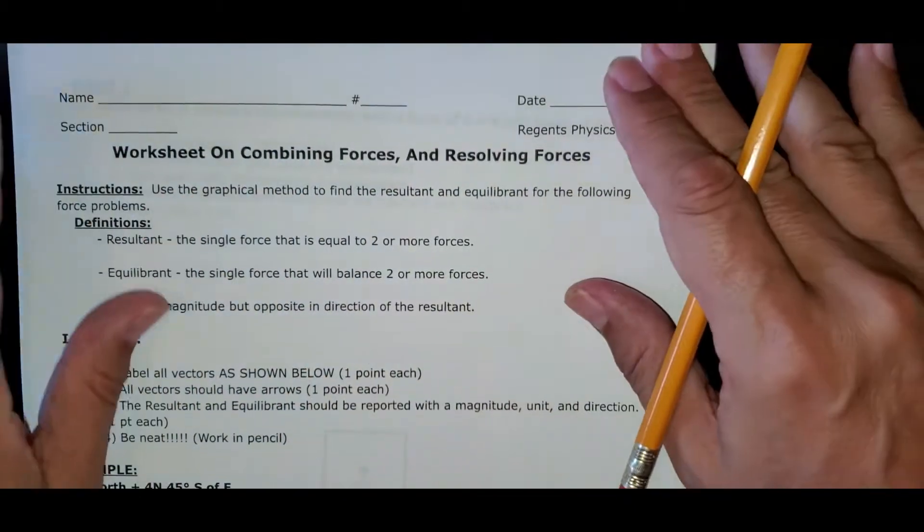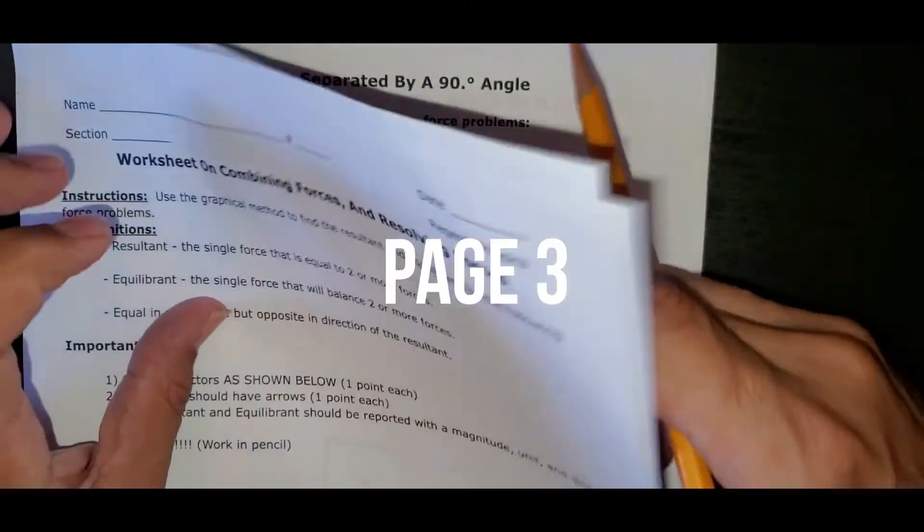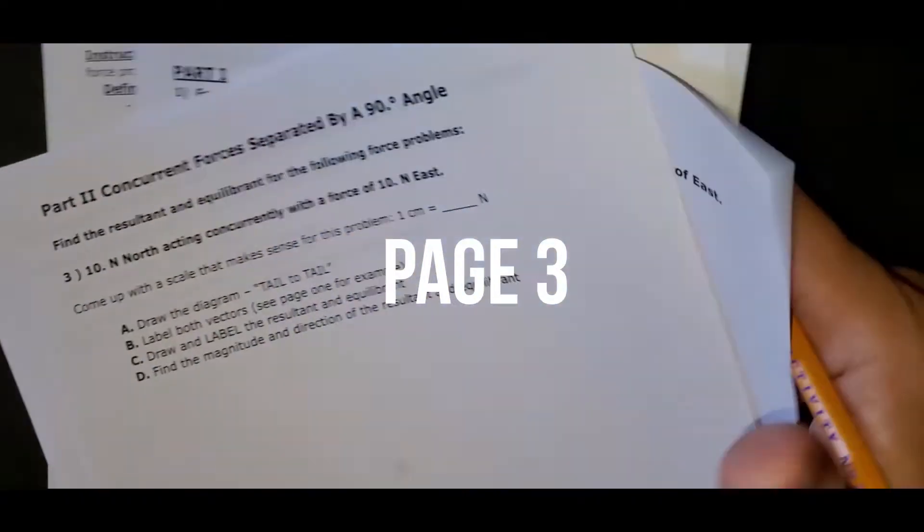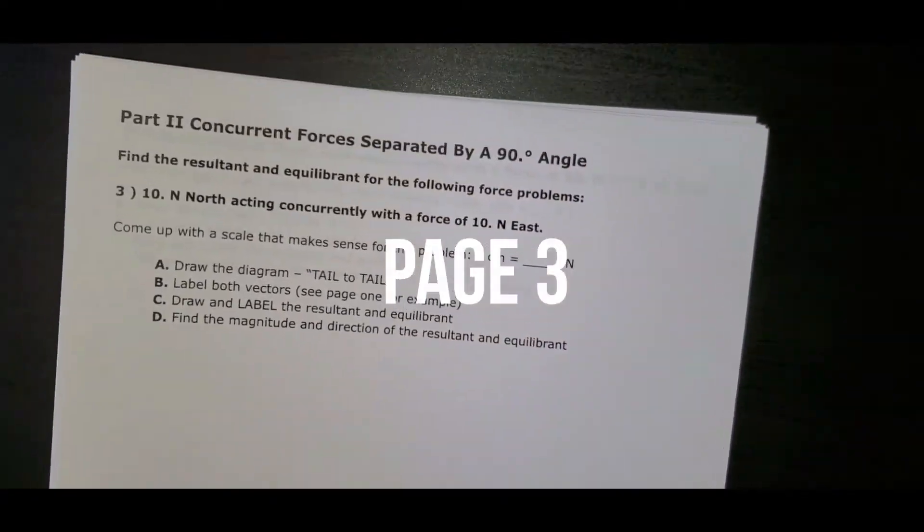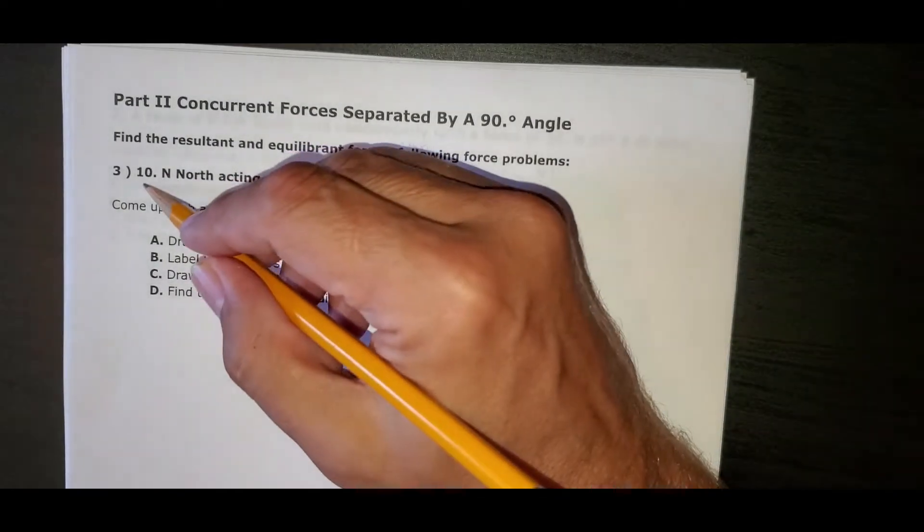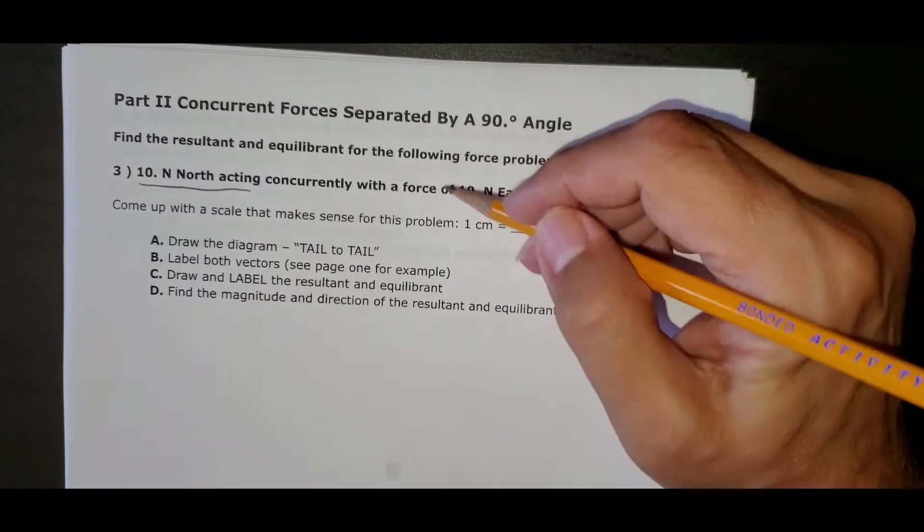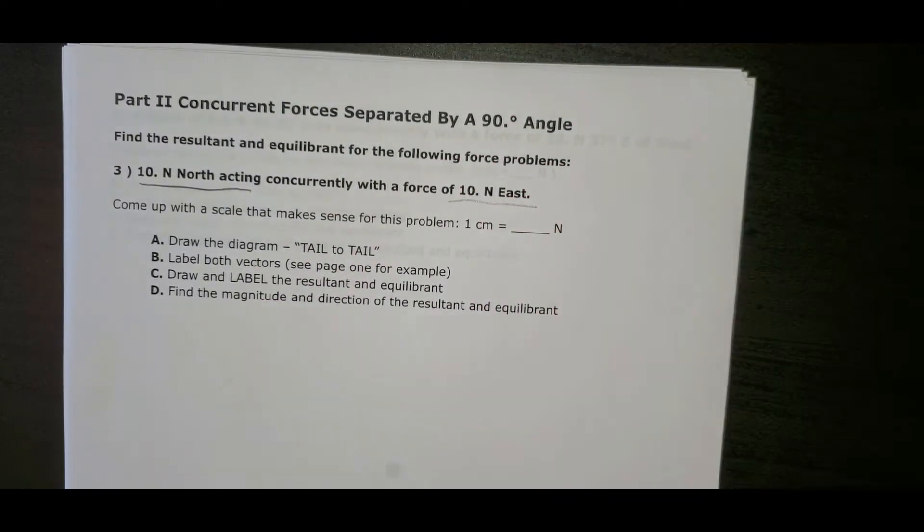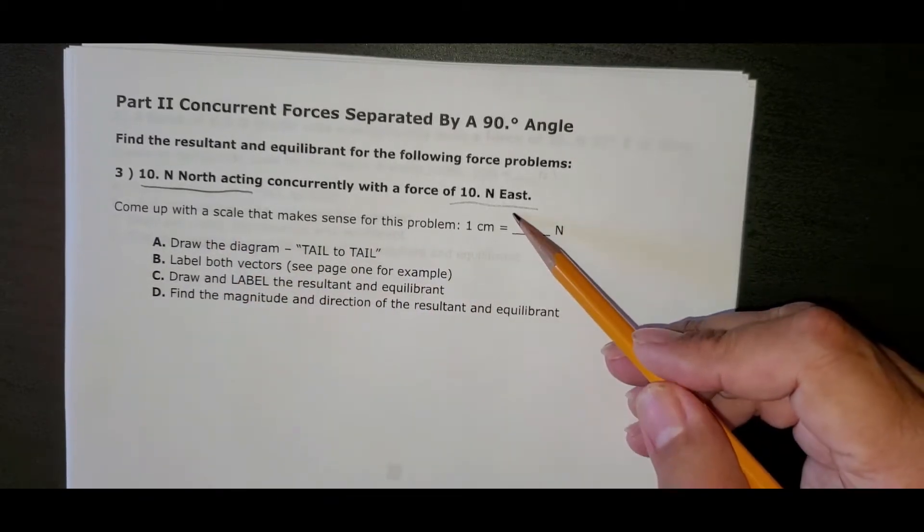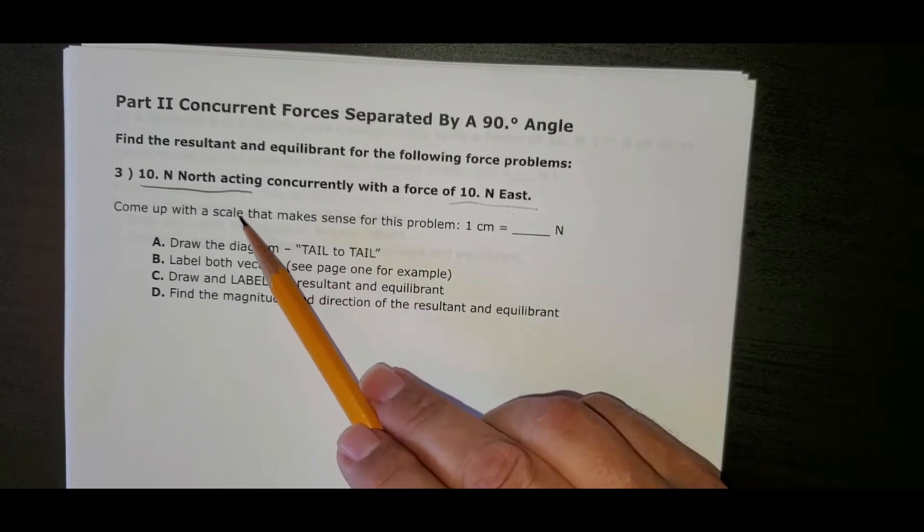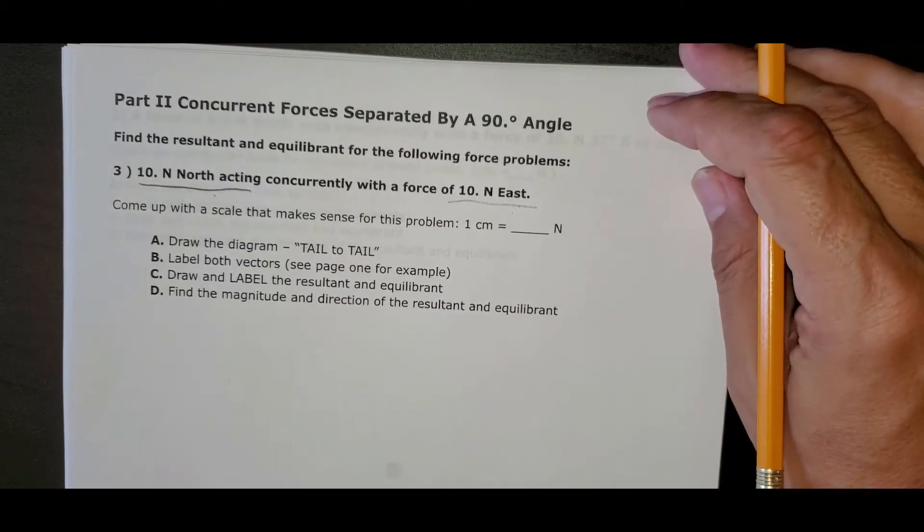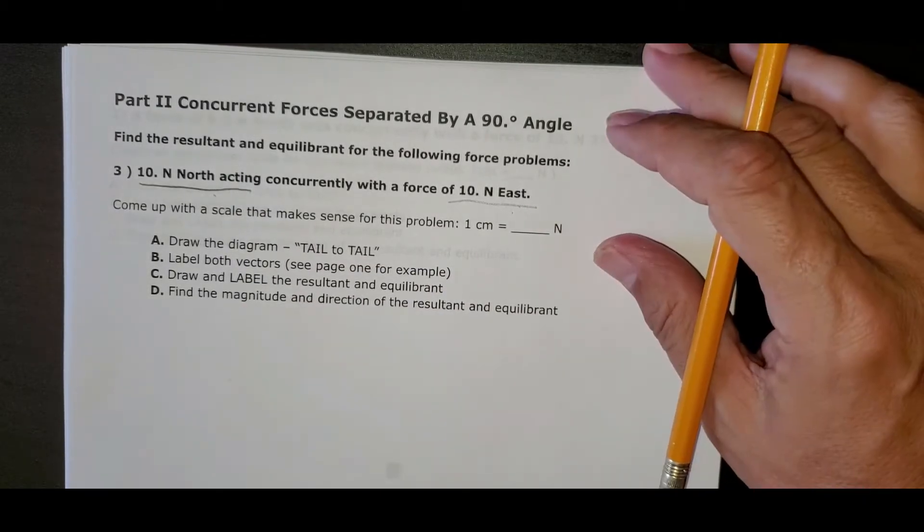This is a little easier. So we have a problem where we've got 10 newtons north acting on an object and 10 newtons east. What's the resultant? What is the result of 10 newtons north combined with 10 newtons east? What single vector would be equivalent to having a 10 newton north force and a 10 newton east force on it? Obviously, it's something that would act in the northeast direction.